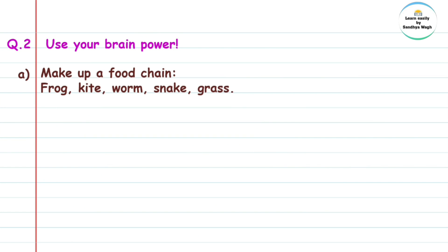Question 2: Use your brain — make up a food chain using: frog, kite, worm, snake, grass.